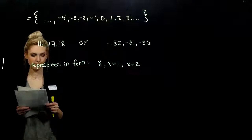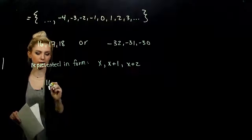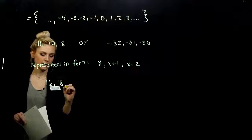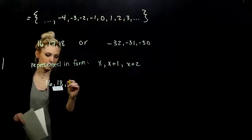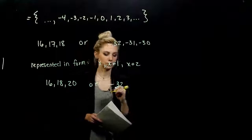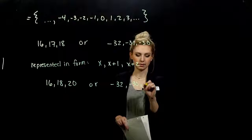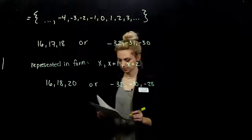Now what about if they're even? So the next even number next to 16 is 18. The one next to 18, 20. Or again, we could start with a negative: negative 32. The next even one is minus 30. Minus 28 is next to minus 30.